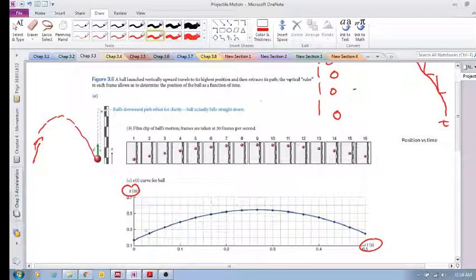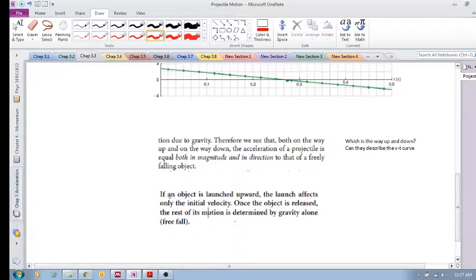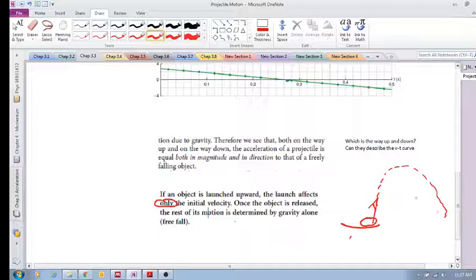So this is projectile motion. I throw the ball up, and the split second it leaves my hand there is no more applied force from my hand. Let's see what the textbook says here: if an object is launched upward, the launch affects only the initial velocity. Once the object is released, the rest of its motion is determined by gravity alone. So there's my hand, there's the ball, and I throw the ball up.